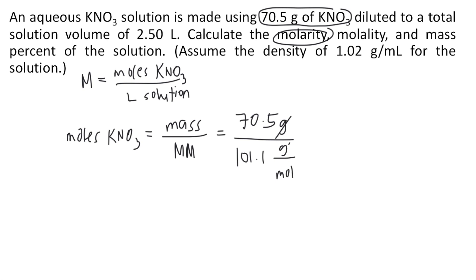So as you can see, the grams would cancel out and this will give us the moles of KNO3. So grab your calculator. So type 70.5 divided by 101.1. That is approximately equal to 0.697 moles. So that is our moles of solute.